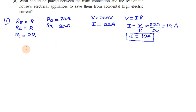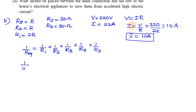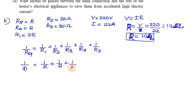For R5, using the parallel resistance formula: 1 over R_total equals 1/R1 plus 1/R2 plus 1/R3 plus 1/R4 plus 1/R5. Substituting: 1/R2 is 1/20, 1/R3 is 1/30, and 1/R5 equals 1 over 2R.